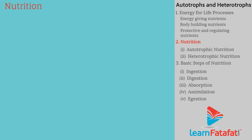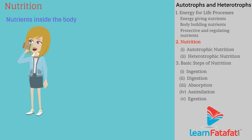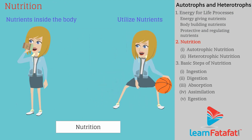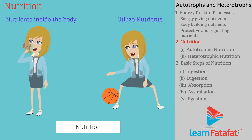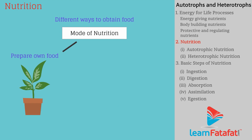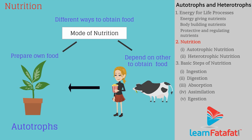Nutrition is the process of getting nutrients inside the body and utilizing them for living. There are different ways by which organisms obtain their food, called the mode of nutrition. For example, some organisms prepare their own food, called autotrophs, and some depend on other organisms to obtain their food, called heterotrophs.